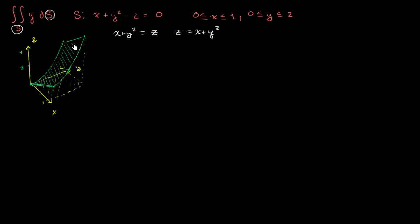This is the surface over which we're going to evaluate the surface integral of the function y. One way you could think about it: y could be the mass density of this surface. When you multiply y times each ds, you're essentially figuring out the mass of that little chunk.